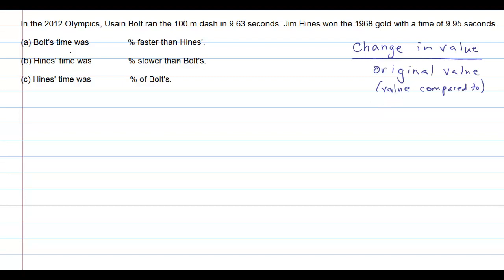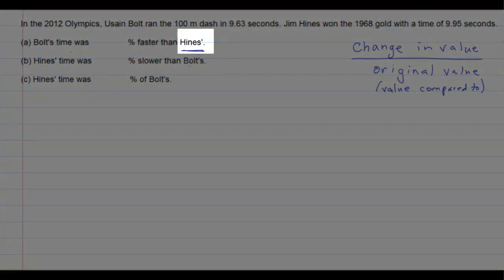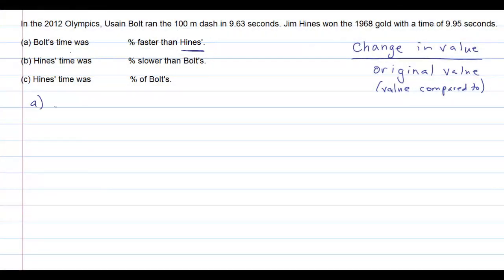So in the case of part A, Bolt's time is being compared to Hines' time. That means I know my denominator has to be Hines' time because I'm comparing it to Hines. Now look at the numerator. I want to look at how much Bolt's time was faster than Hines. Faster than means we're going to do a subtraction. We want to see the difference between those two.